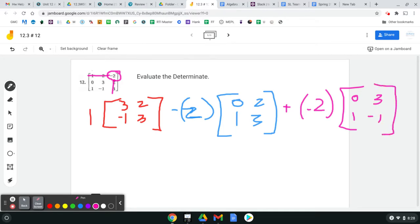All right, let's see if I can get this right, and then we'll check it in our calculator. So we're going to have one times, that's nine minus a negative two. So one times 11 minus two times negative two, and then plus negative two times negative three.